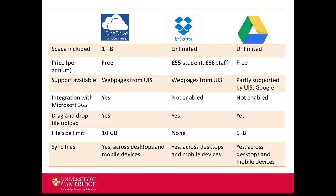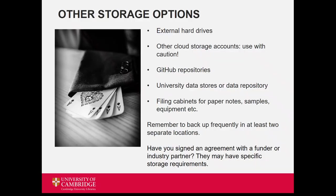The university offers cloud storage options including Google Drive, OneDrive, Dropbox and SharePoint. These are all supported by UIS — the university information services — and so they are more secure than personal cloud storage accounts would be. Other storage options include external hard drives, other cloud storage accounts, GitHub repositories, the university data repository, filing cabinets for paper notes and physical samples. However you choose to store your data, you should make sure that it's secure and meets any funder or partner requirements you may have.